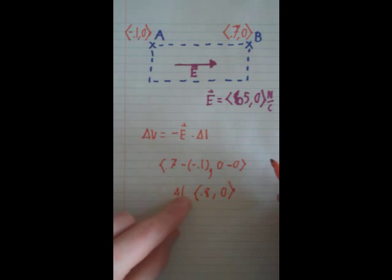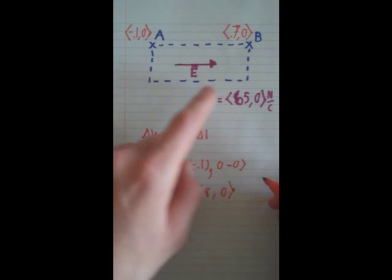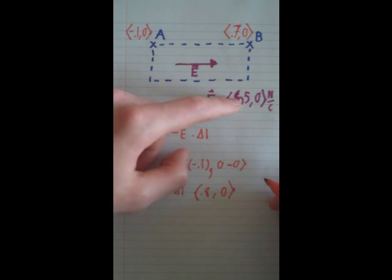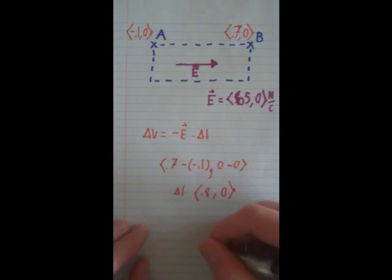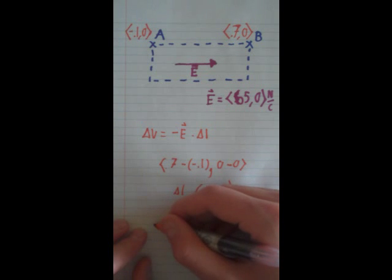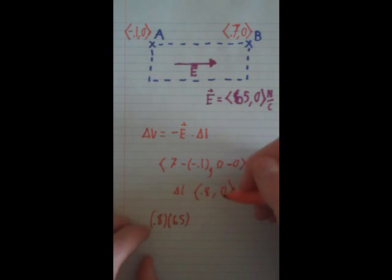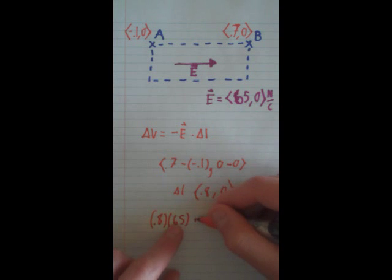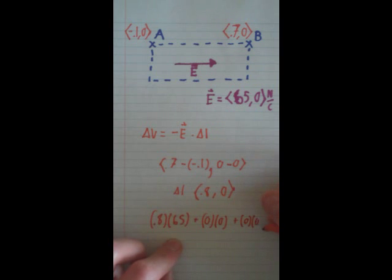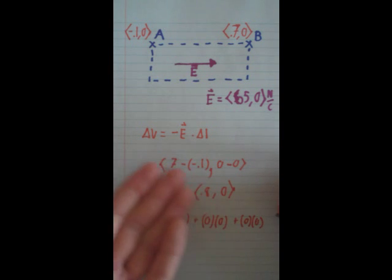Our two X components for delta L and E for this one is 65 and 0.8. When you multiply those together, let me just write it out first. 0.8 times 65. So that's our two X components, plus 0 and 0 because those are our two Y components. I'm just going to do 0 and 0 because those could be our Z components. If there's no Z component, you can just put it down as no change in Z component.